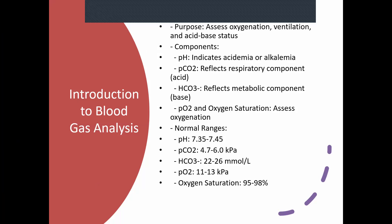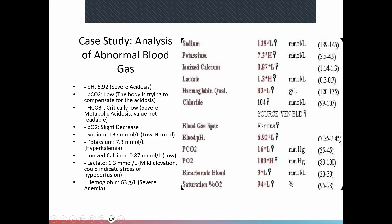Now let's look at our patient — brought in unresponsive. This is a venous blood sample. The main difference between venous and arterial blood is that venous blood tends to be slightly more acidotic because the carbon dioxide content is slightly higher. Potassium and calcium tend to be a bit higher in venous blood, and sodium tends to be a bit lower. Ideally you want arterial blood, but venous is workable.